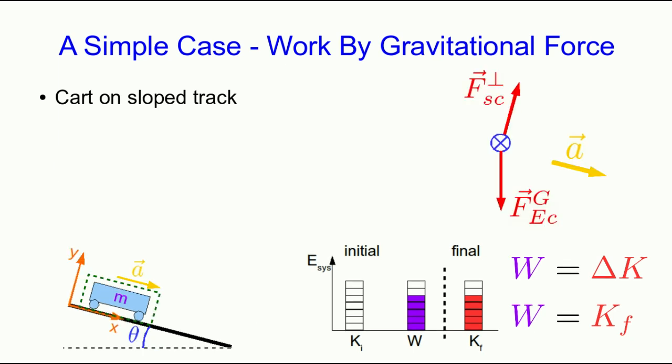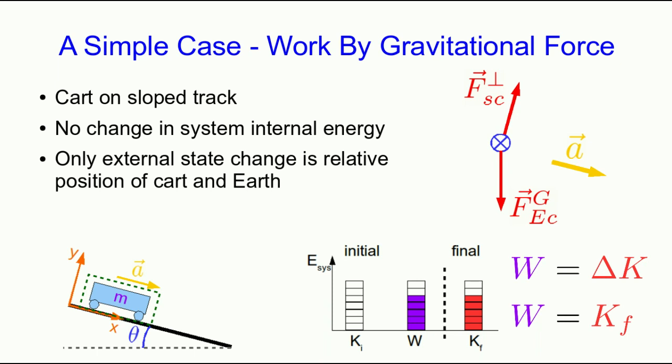We have a simple free body diagram with only two forces. There is no possible change in internal energy since we're treating this as a particle. The only external state change is the change in relative position of the cart and the earth, which means all of the work done must be done by the gravitational force. The perpendicular force due to the surface is not doing any work. So we've identified exactly what force is doing the work: the gravitational force — and note that it isn't parallel to the motion.